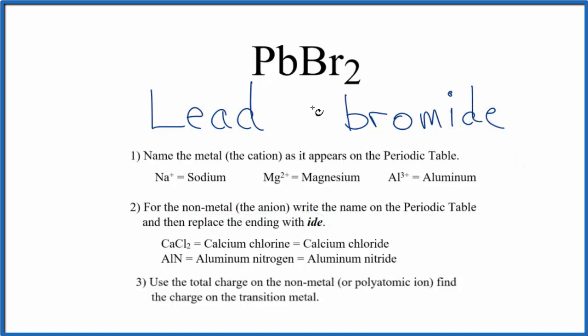So at this point we have lead bromide. But we said that Pb is a transition metal. So for a transition metal, we've really got to look at what it's bonded to to figure out its charge. It can have different charges.